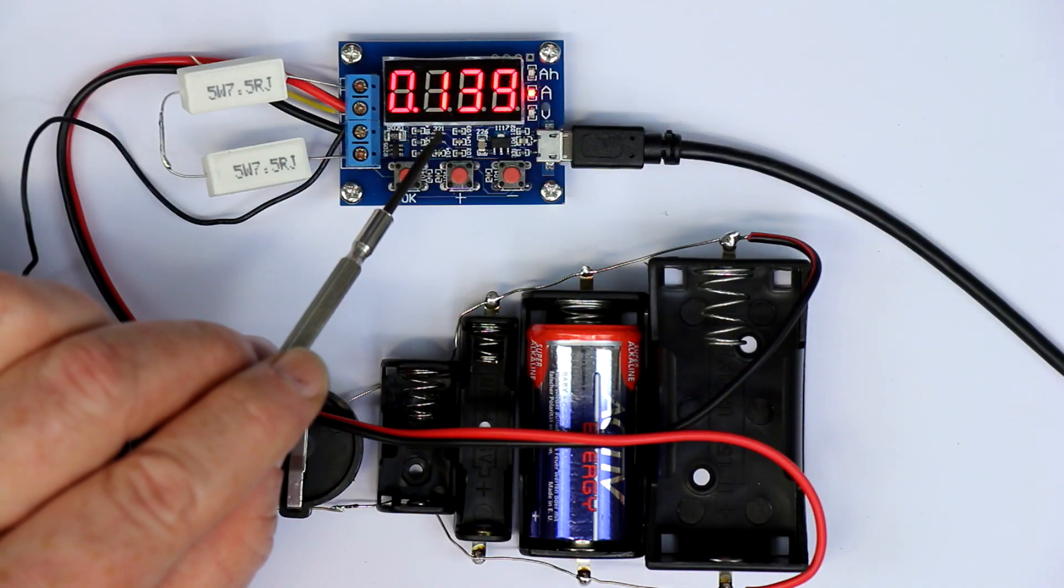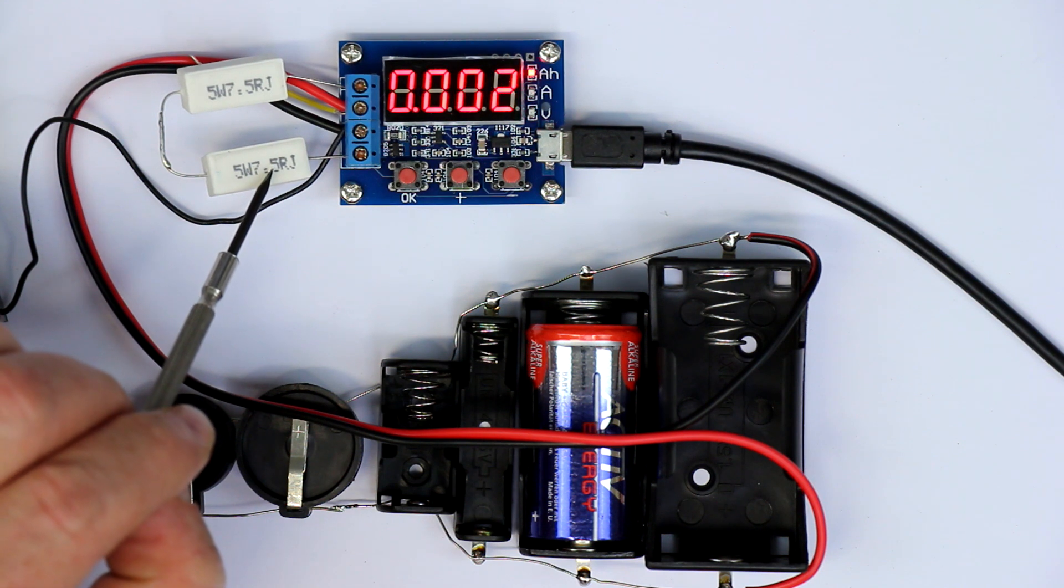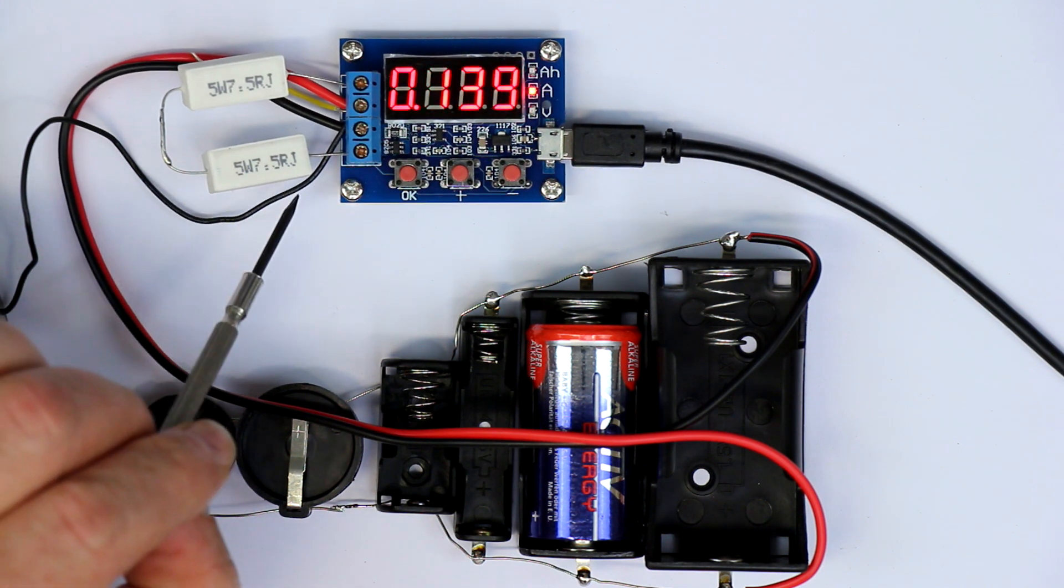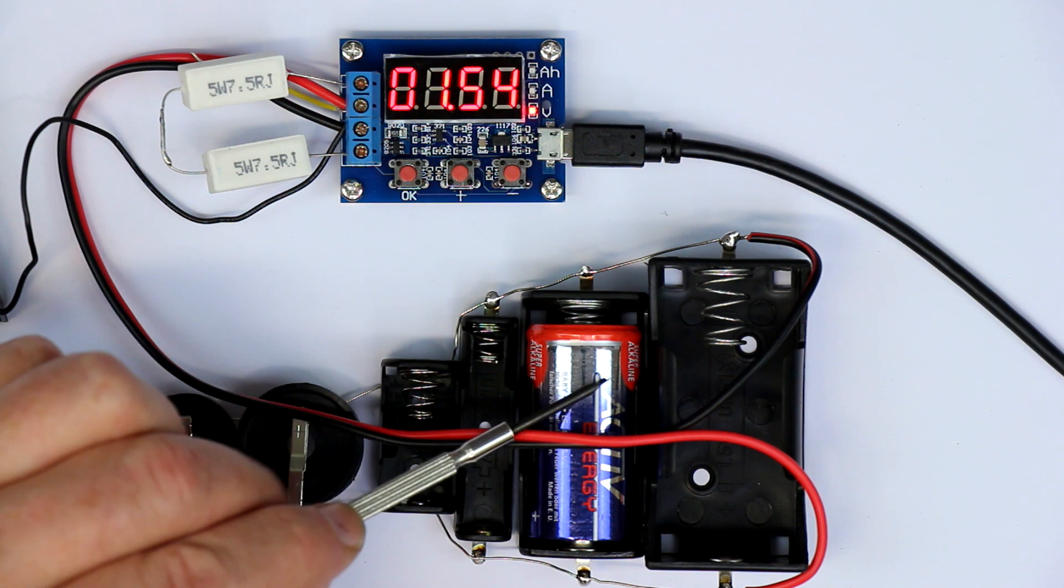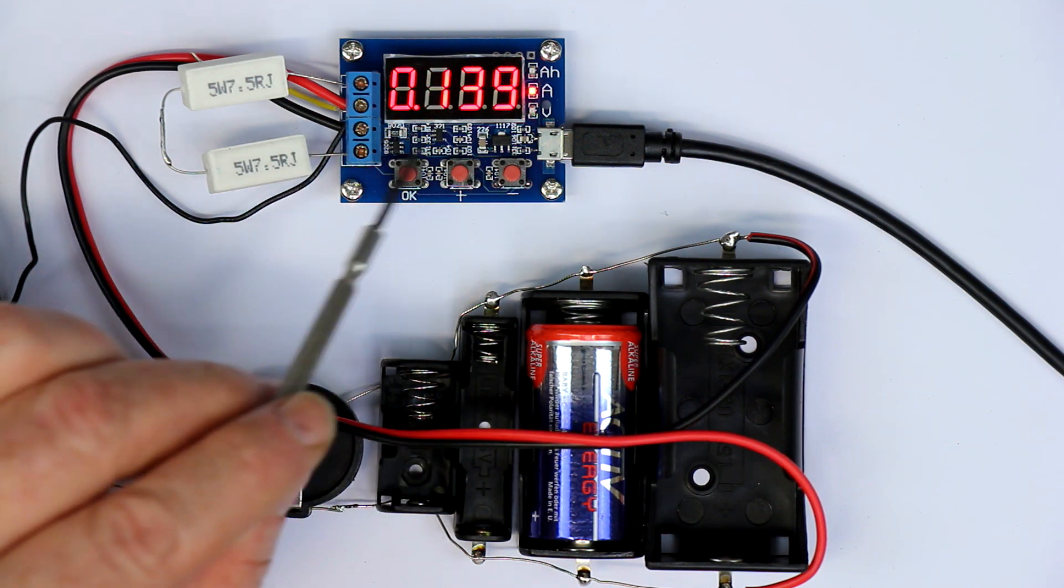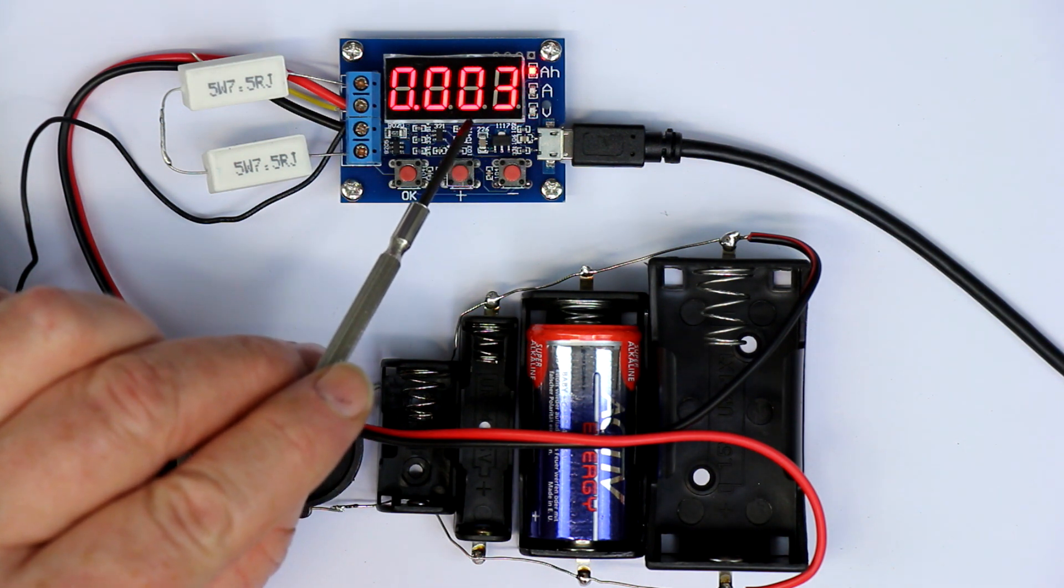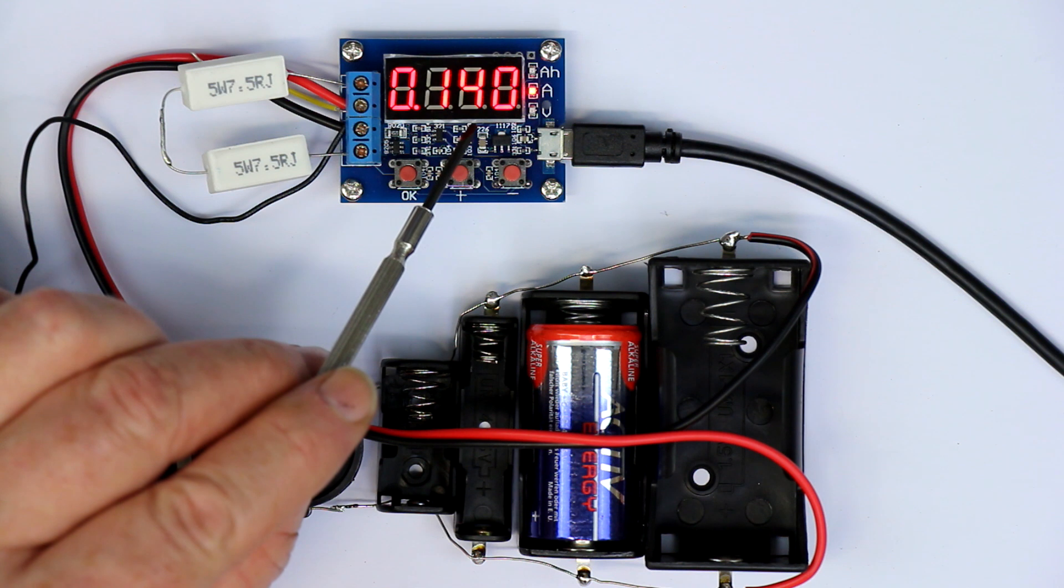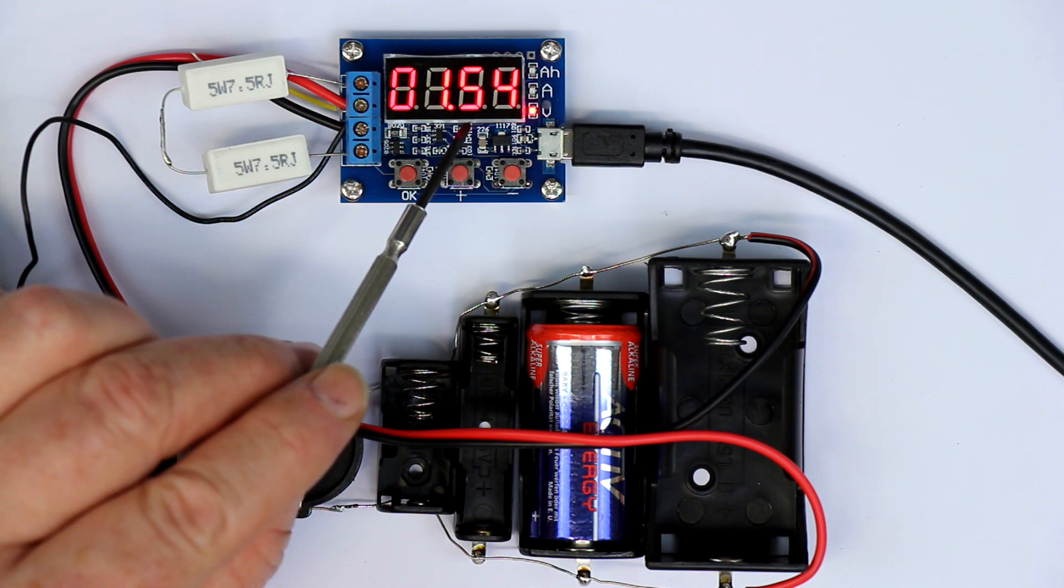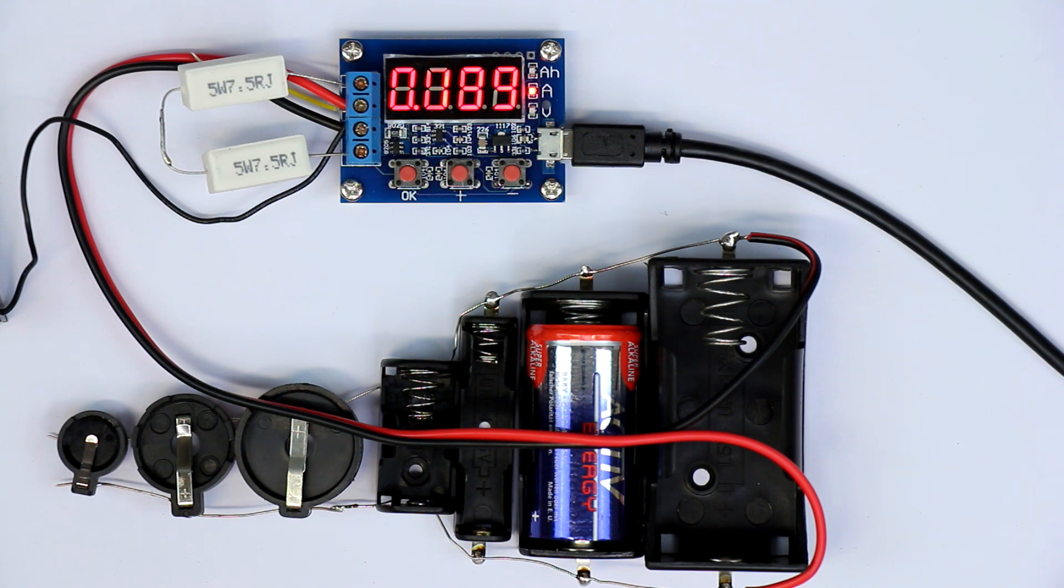But look closely. We have 15 ohms discharge resistors as a load resistor and we have a 1.5 volt cell. This should give around 100 milliamps. And what do we see? 138, 39. So this is around 30 or 40 percent off. I think there is something seriously wrong with the way they are measuring the current here.